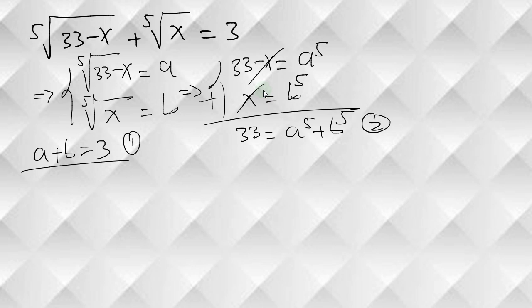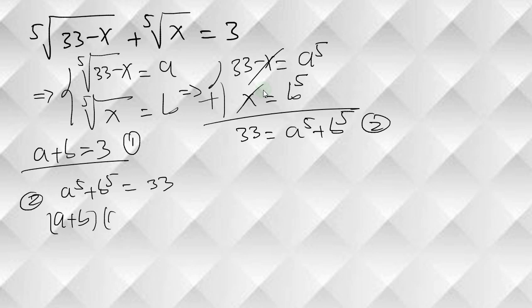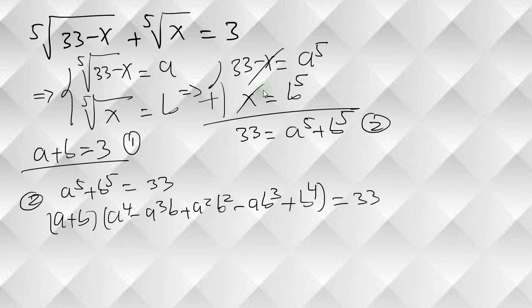Let's simplify our second equation: a to the 5 plus b to the 5. We can write this as (a + b) times (a to the 4 minus a cubed b plus a squared b squared minus ab cubed plus b to the 4), and this equals 33.